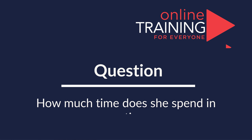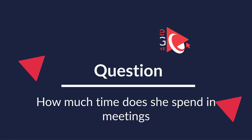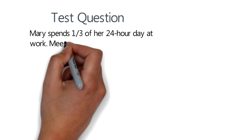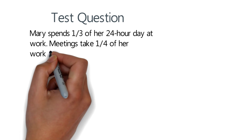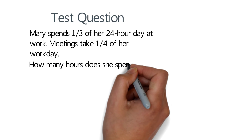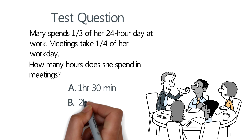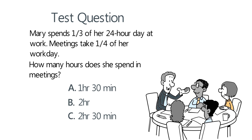Here's an interesting question which validates how well you plan your day-to-day work. Mary spends one-third of her 24-hour day at work. Meetings take one-fourth of her work day. How many hours does she spend in meetings? Choices are: A) 1 hour 30 minutes, B) 2 hours, C) 2 hours 30 minutes, D) 3 hours. Give yourself 10 to 15 seconds depending on how well you solve these types of problems.